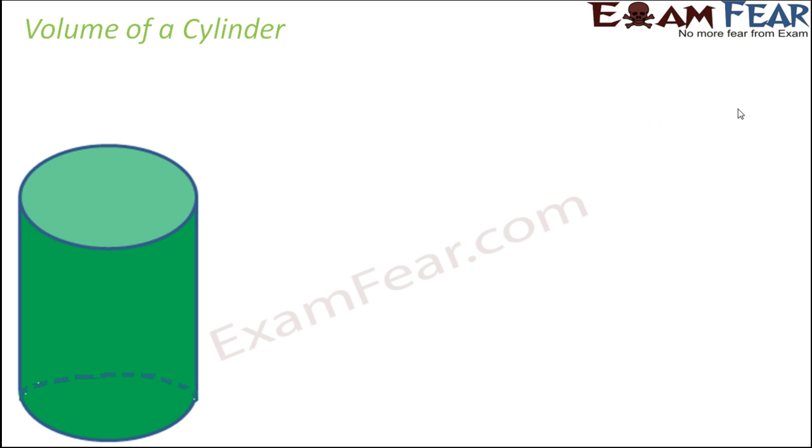Now what about the volume of a cylinder? How do we calculate the volume of the cylinder? When we look at the cylinder we know the area of the base and the area of the top. How can we visualize a cylinder? This is your base. Base and top are identical. The area of the base is basically the area of the circle which is pi r square.